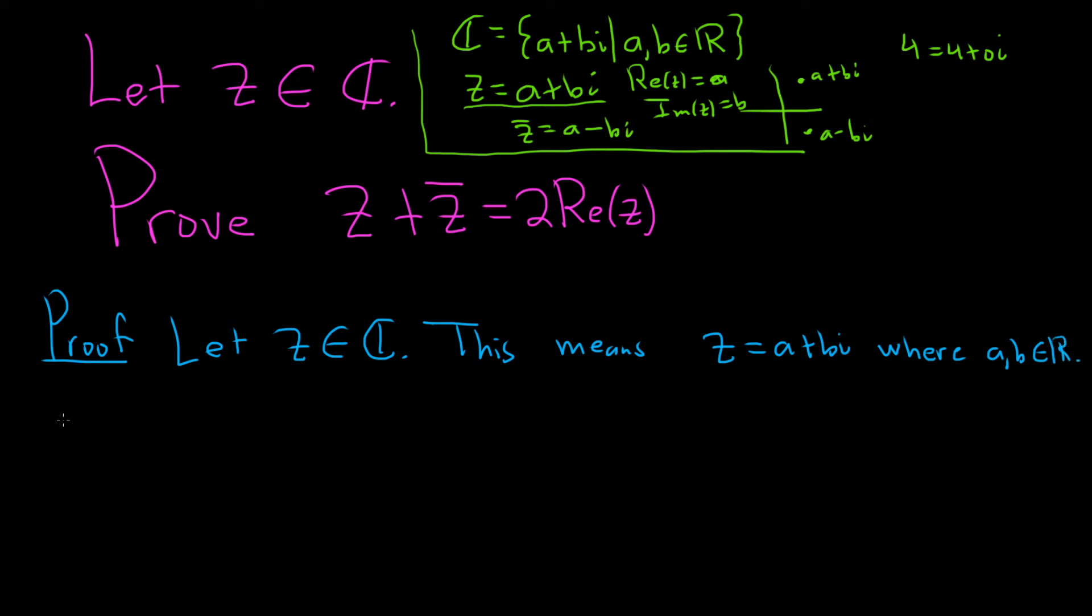So now we just have to add them up and see what happens. So then z plus the conjugate of z is equal to, well, we know z is a plus bi. Plus the conjugate which is a minus bi. And so this is equal to, well, look at that. They cancel. So we get a plus a. So that's 2a.